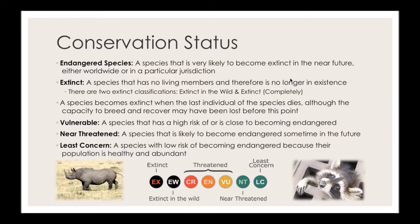The problem gets worse and worse as a species gets closer to the point of extinction, and it's really hard for them to recover if very few are left. Whereas if we notice the species decline while there's still a large enough population to breed, they can have a much easier time recovering.